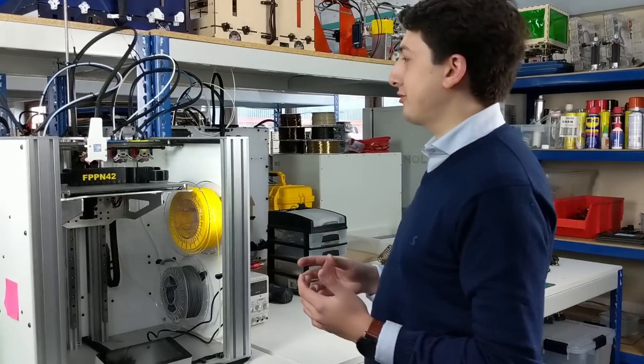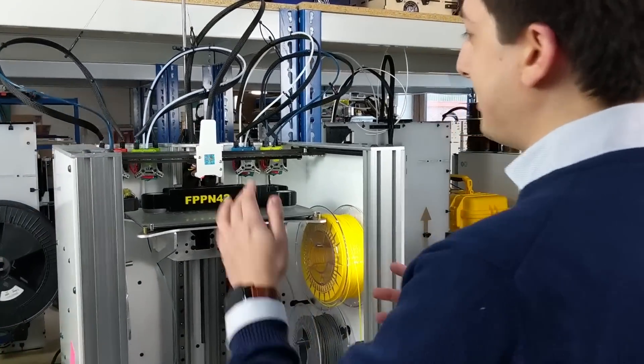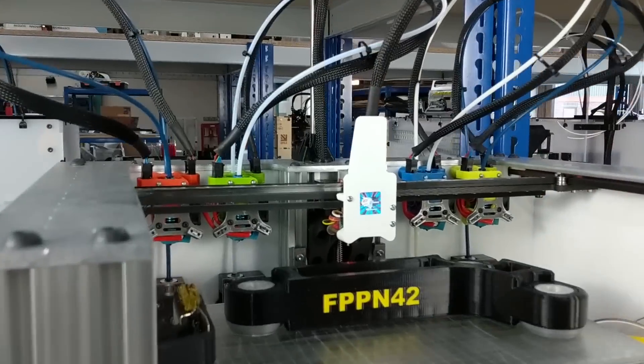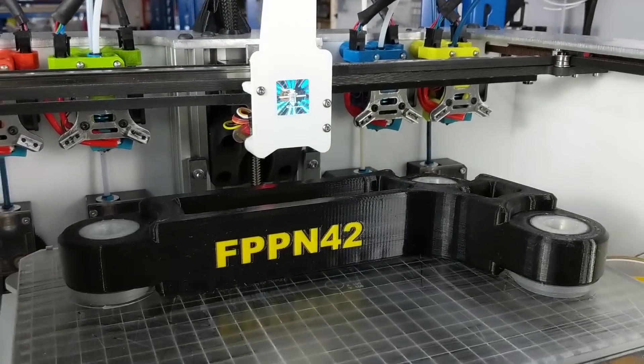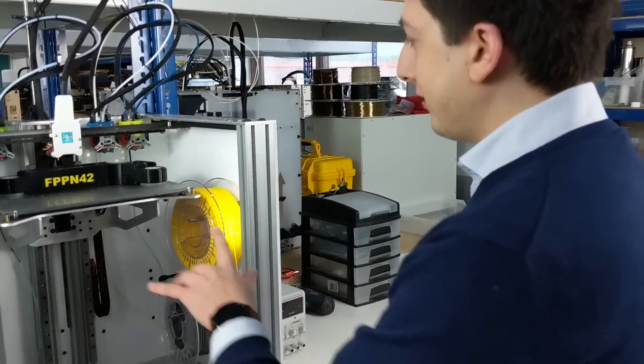So here we have our new tool changing demonstrator. It is a 3D printer with four totally independent hotends and the machine can automatically pick up those hotends during the print and put them back on the docking station. It does so with incredible accuracy.